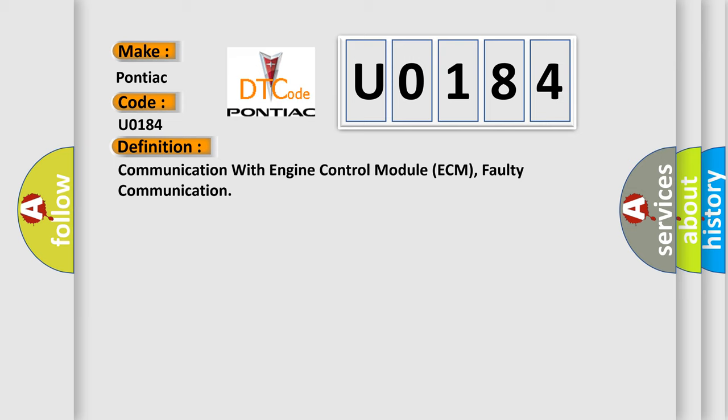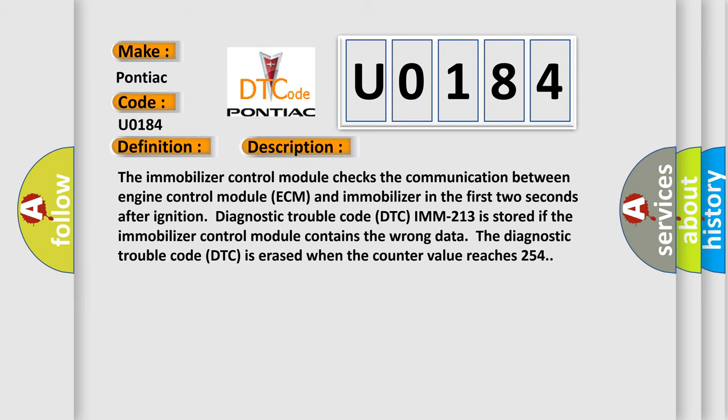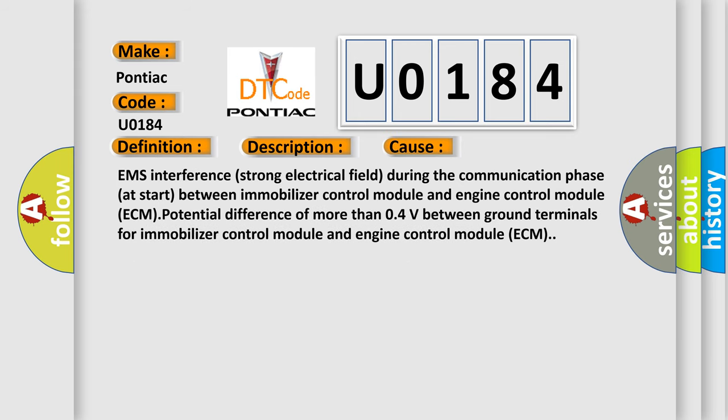The immobilizer control module checks the communication between the Engine Control Module ECM and the immobilizer in the first two seconds after ignition; diagnostic trouble code DTC IMM-213 is stored. If the immobilizer control module contains the wrong data, the DTC is erased when the counter value reaches 254. This diagnostic error occurs most often due to EMS interference or a strong electrical field during the communication phase at start between the immobilizer control module and ECM, or a potential difference of more than 0.4V between ground terminals for the immobilizer control module and ECM.